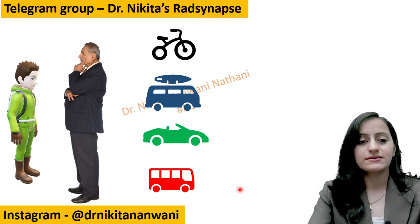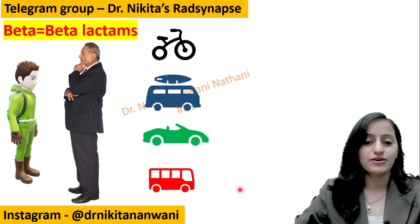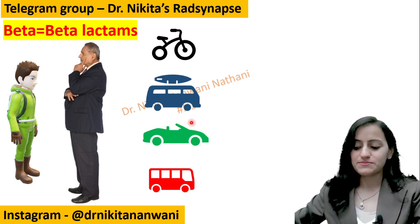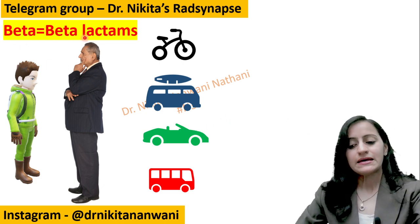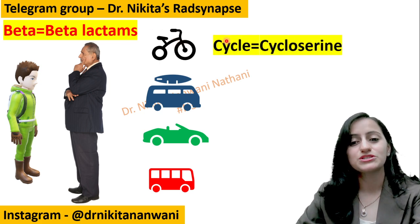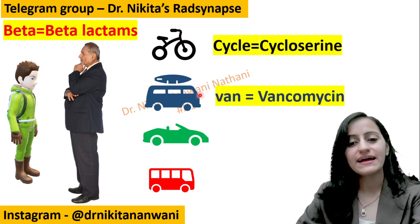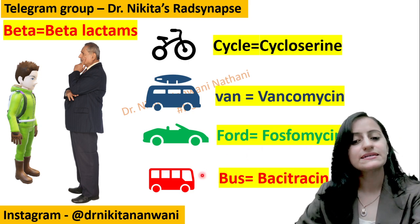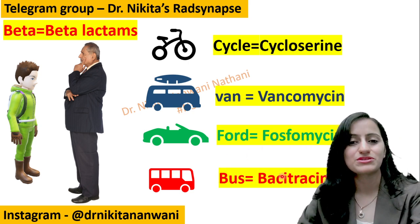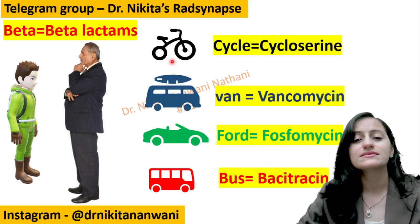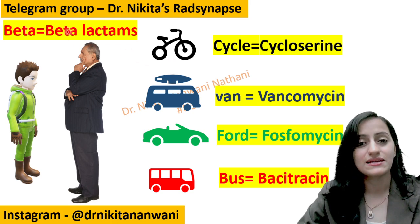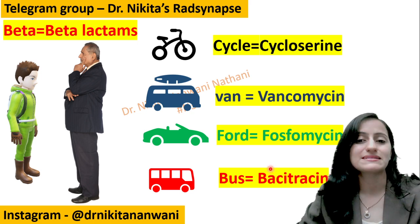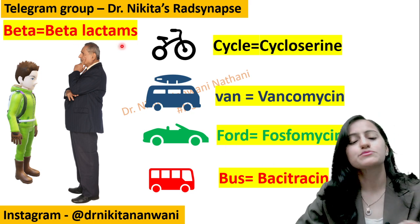So basically the mnemonic here is: remember that it is your Beta — which stands for beta-lactams. Then cycle which is cycloserine, van which is vancomycin, Ford which is phosphomycin, and bus which is bacitracin. So the cell wall synthesis inhibitor drugs are beta-lactams, cycloserine, vancomycin, phosphomycin, and bacitracin.